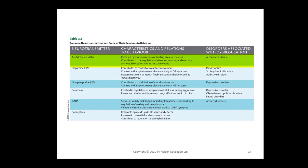Acetylcholine is released by motor neurons controlling skeletal muscles and contributes to regulation of attention, arousal, and memory. Some acetylcholine receptors are stimulated by nicotine, and Alzheimer's disease is connected with dysregulation of acetylcholine. Dopamine contributes to control of voluntary movement. Cocaine and amphetamines elevate activity at dopamine synapses, and dopamine circuits in the medial forebrain bundle are characterized as a reward pathway. Parkinson's disease, schizophrenic disorders, and addictive disorders are connected with dysregulation of dopamine.